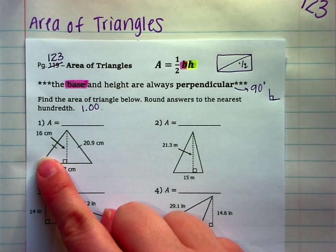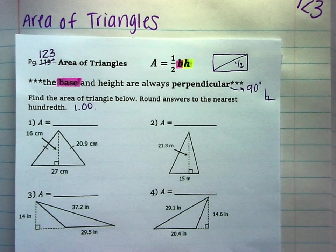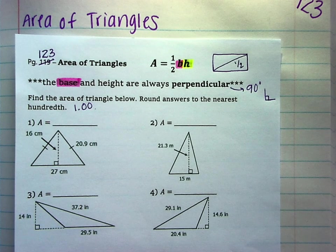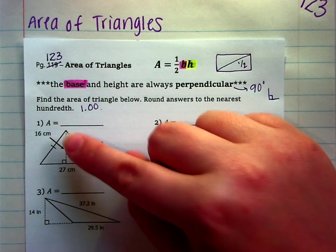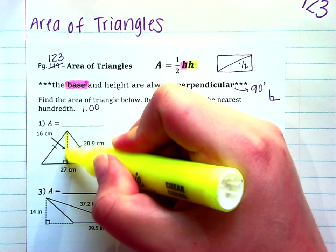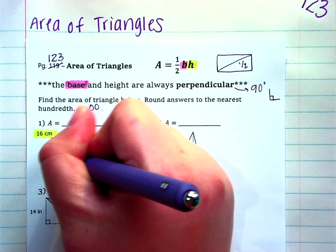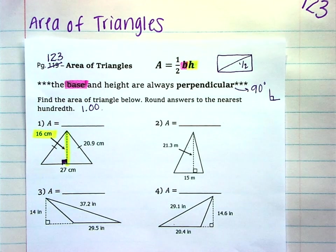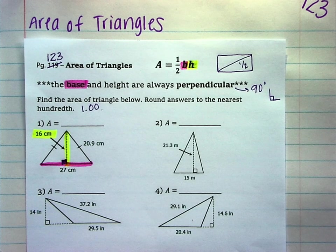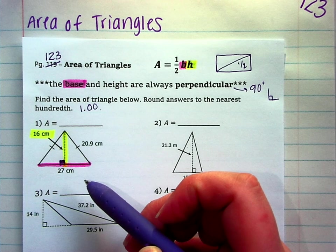All right, number one. What kind of triangle is this? I see two congruent thick marks. Yes, it is isosceles. Isosceles triangles have two congruent sides. And then they drew in the height right here. So this is telling you how tall the triangle is. So 16 is going to be our height. And it is perpendicular. There's our right angle we're looking for. To the base. So the entire base is 27.